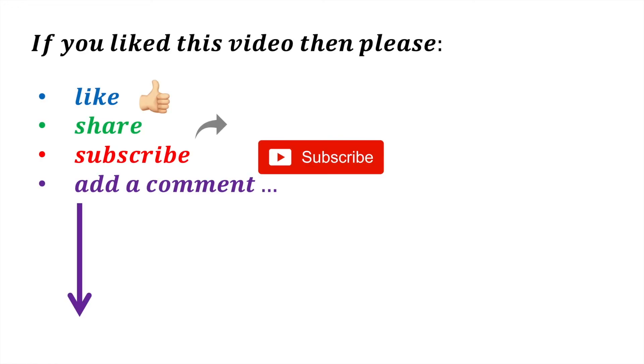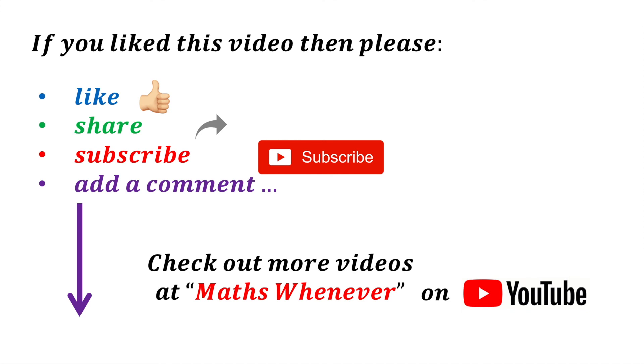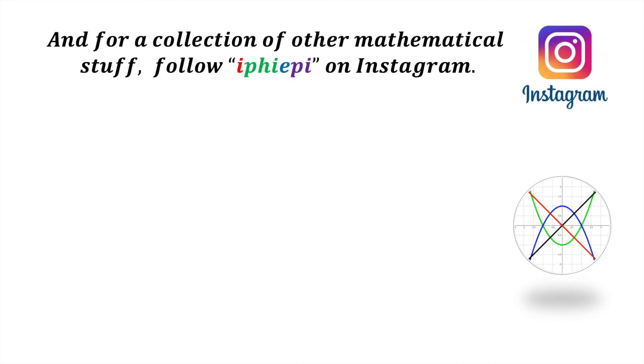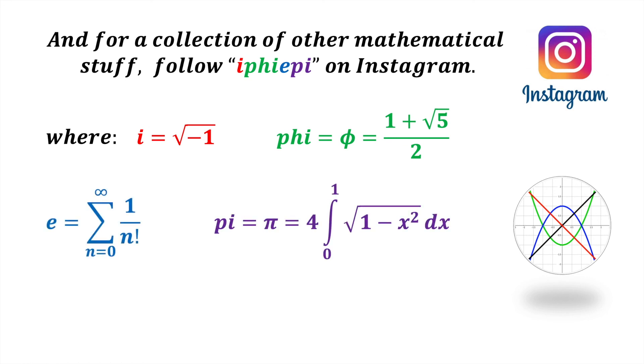If you liked this video, then please like, share, subscribe and add a comment. You can also check out more videos at MathsWhenever on YouTube. And for a collection of other mathematical stuff, follow i-phi-e-pi on Instagram, where i is the imaginary unit, phi is the golden ratio, e is the exponential function, and pi is the ratio of a circle's circumference to its diameter. Thanks for watching and see you next time.